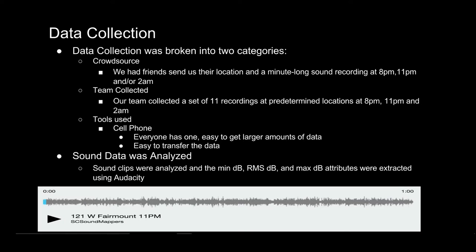Our data collection was broken into two categories. The first was crowdsourced data — we had friends send us their location and a minute-long sound recording at 8 p.m., 11 p.m., and/or 2 a.m. Our second method was team collected data; our team collected a set of 11 recordings at predetermined locations at 8 p.m., 11 p.m., and 2 a.m. The main tool used were cell phones, as most people have one and it's easier to get larger amounts of data that way. Our sound data is analyzed in terms of the minimum decibel, root mean square decibel value, and the maximum decibel value. These attributes were extracted using Audacity.